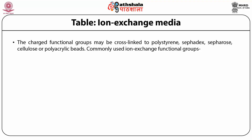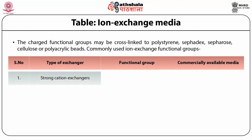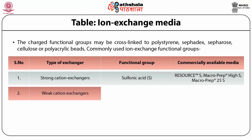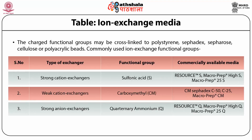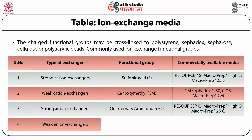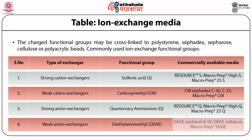There are different types of ion exchange media available commercially. Strong cation exchangers contain sulfonic acid as a functional group, available as Macropap. Weak cation exchangers have carboxymethyl cellulose as their functional group, available commercially as CM Sephadex. Strong anion exchangers have a quaternary ammonium functional group, available commercially as Resource Q, Macropap Q, Macropap 25Q. Weak anion exchangers have DEAE (diethylaminoethyl) as their functional group, available as DEAE Sephacel A50, DEAE cellulose, or Macroprep DEAE.